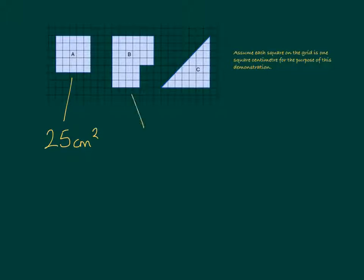For shape B, we could split the shape into two parts, as shown here, or as shown here, but we'll come onto that a little later.